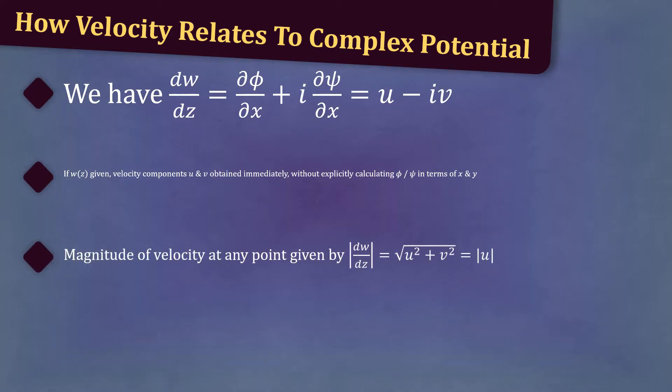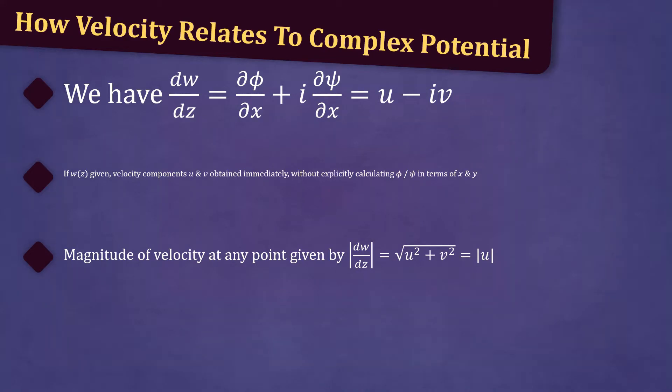The magnitude of velocity at any point is given by |dw/dz| = √(u² + v²) = |u|.